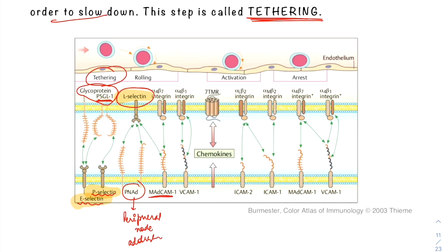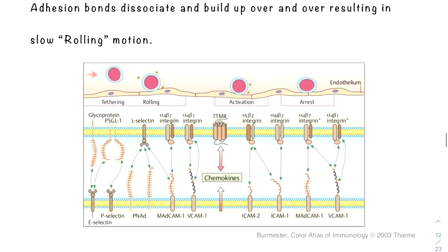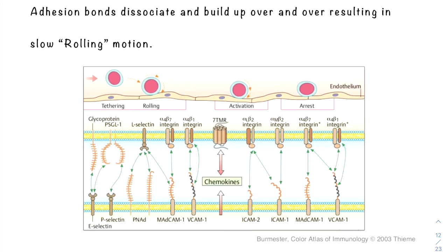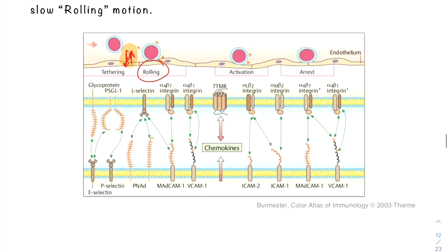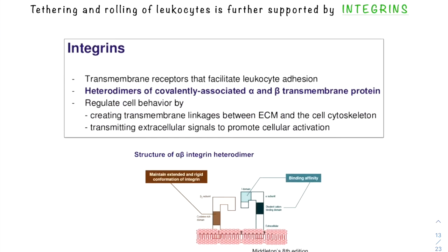The adhesion bonds dissociate and build up over and over again, leading to the slow rolling motion over the endothelium. This rolling motion is further supported by integrins. Let us learn what integrins are.